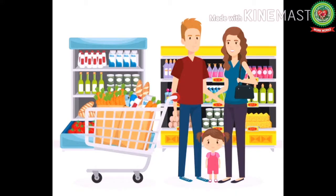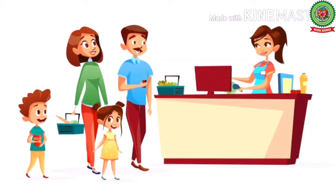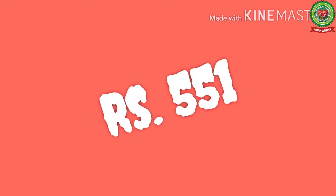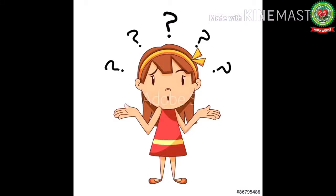This is Mr. and Mrs. Sharma and their daughter Rhea. One day they went to the supermarket and bought a lot of things. When they were done with the shopping, they went to the billing counter to pay their amount. This was the amount of money which they had to pay — now how will they pay the money? This is a huge amount.